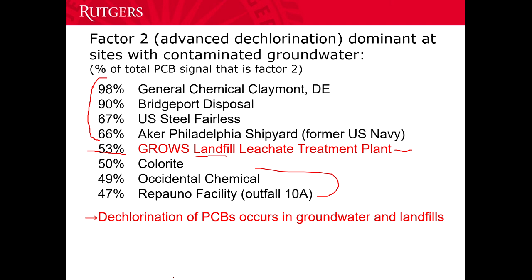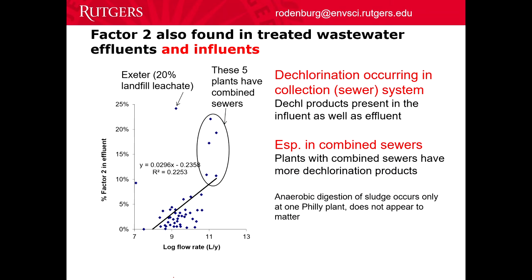I also found a lot of this dechlorination signal coming from the wastewater treatment plants, and I was trying to figure out why. I plotted the amount of the dechlorination factor versus the log of the flow rate of the plant. I had five plants with a ton of dechlorination. I asked my colleague at DRBC what these places had in common, and he said those are the only plants in our system that have combined sewers. So there's something going on with combined sewers. There was also another plant that treats a lot of landfill leachate — 20% of their flow — and they also have a lot of dechlorination products.